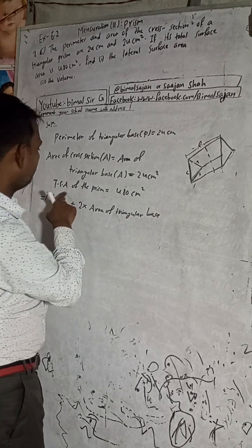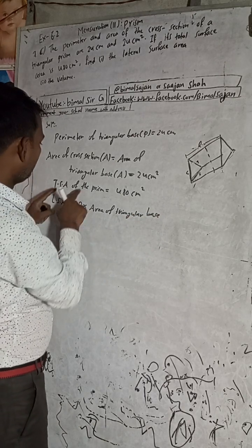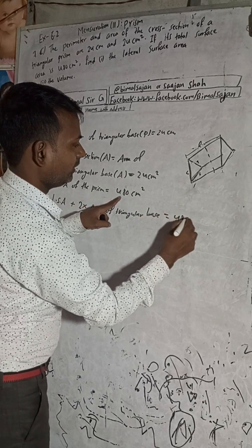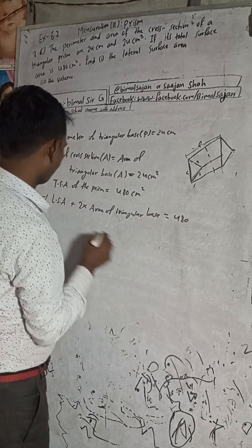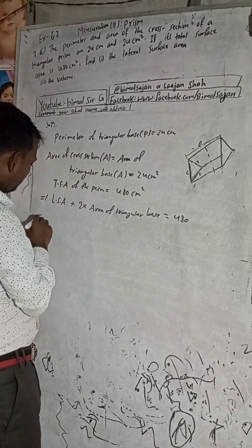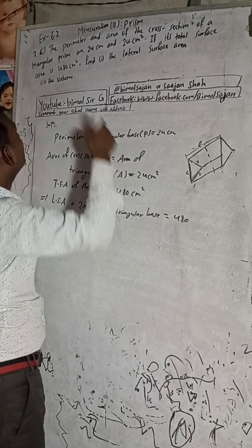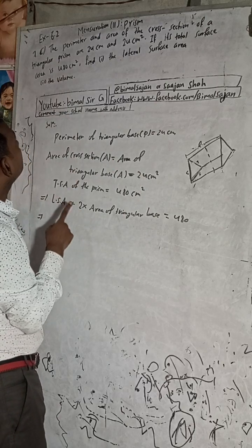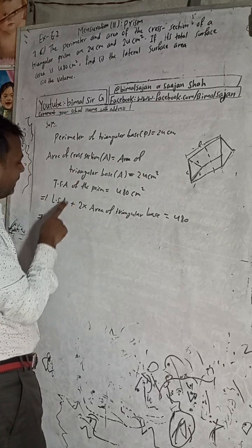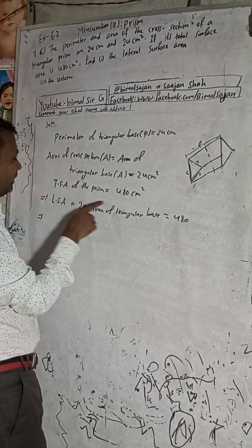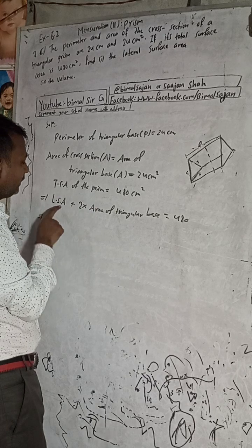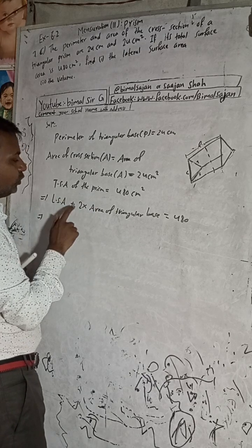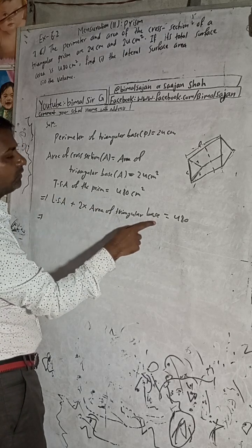So this is the formula for total surface area. As written in the previous question 7c, the formula is: total surface area equals lateral surface area plus 2 into area of cross-section. You have to understand that area of cross-section is the area of the triangular base.